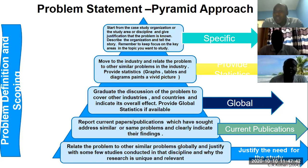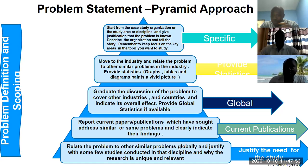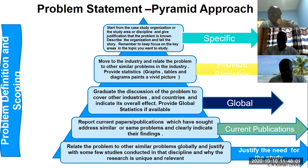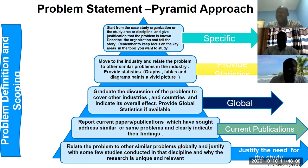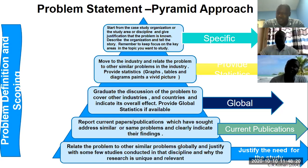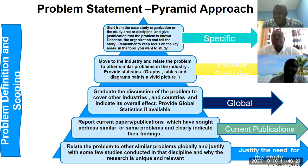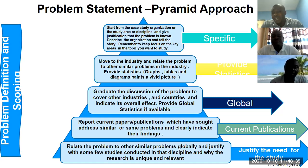Go to the limitations and future studies section of published papers. You don't need to worry yourself trying to couch a problem. Take publications in your area of study, go to the limitations or future recommendations section, and whoever wrote that paper will tell you where future studies should look. That is a solid problem because it is premised on peer-reviewed work — nobody can shoot you down. We came up with a pyramid approach for the problem statement.